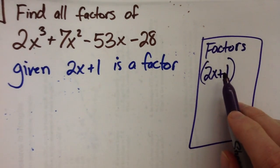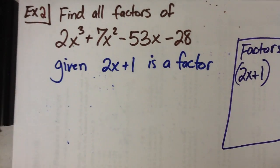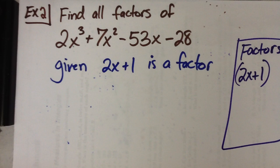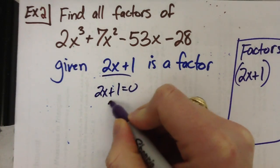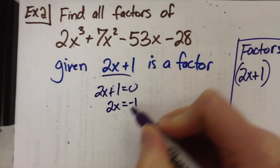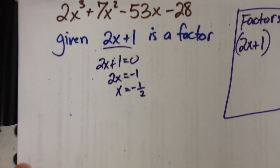Factors, I always put them in parentheses, because we always end up multiplying factors together. If you keep putting them in parentheses, it'll probably help you remember what a factor is. So you're given one factor. Let's set it equal to zero and solve it, so we can do our synthetic division. So negative 1 half will go in the box.